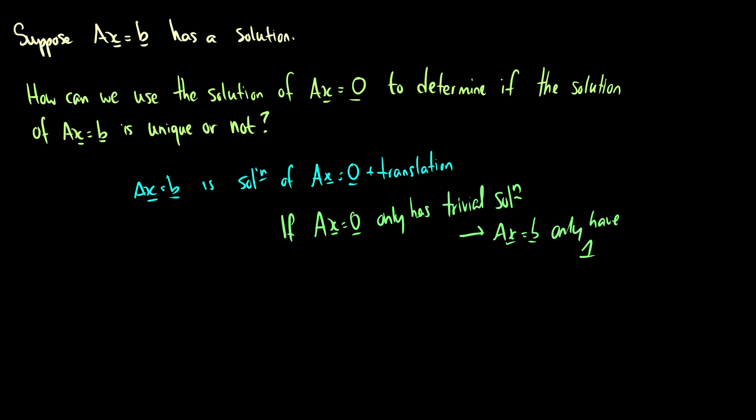Because it's just a translation. So again, if ax equals zero only has the trivial solution, then our solution to ax equals b is just the trivial solution plus the translation.